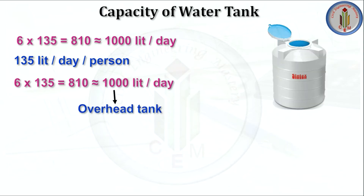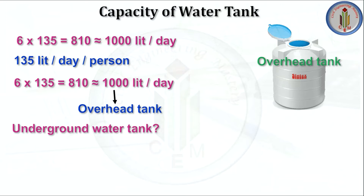We store this water in an overhead tank. If we require 1000 liters of water, we can go up to 1500 liters capacity for the overhead tank. If we go for 3000 or 4000 liters, that is wasteful because we require very little. If we store too much water, the water will become impure and not good to use.